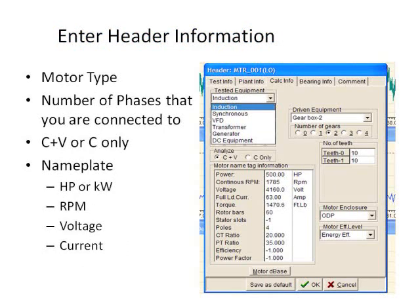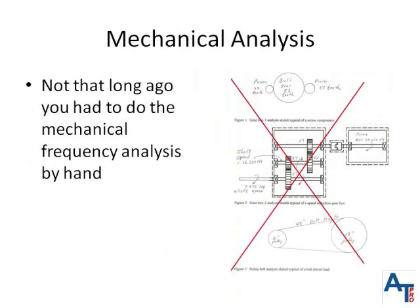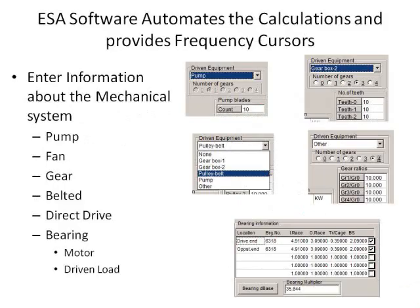At minimum, you need to enter motor nameplate voltage, current, running speed, and horsepower or kW when ready to do the analysis. However, nameplate data is not required during the data collection process. Some systems will require you to use a calculator to manually determine various mechanical machine frequencies. A modern ESA system allows you to enter mechanical system information so the analysis becomes quick and easy. Our software allows the technician to enter information about the mechanical system and then relevant fault frequencies are automatically calculated and the software provides cursors for locating these frequencies within the spectrum. The driven equipment drop-down box allows you to analyze belted, geared, and bladed equipment. Note that mechanical system information is not required for motor electrical and mechanical analysis and is only relevant when there is a need to analyze the mechanical load.